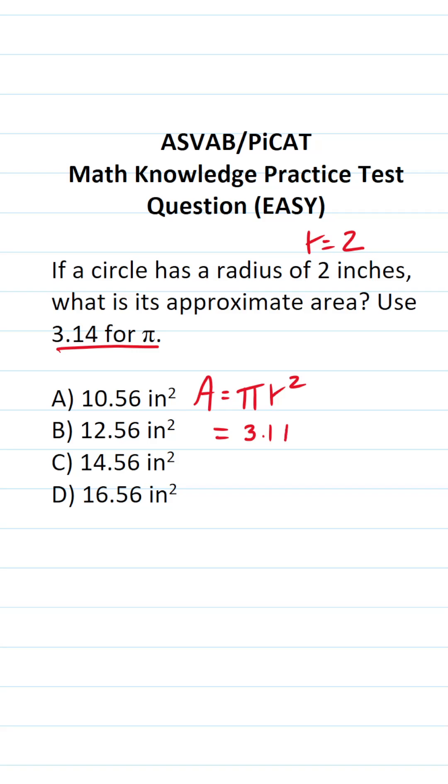This becomes 3.14 times 2 squared. 2 squared is the same thing as 2 times 2, so this becomes 3.14 times 4. Alright, let's do this math off to the side. We have 3.14 times 4.